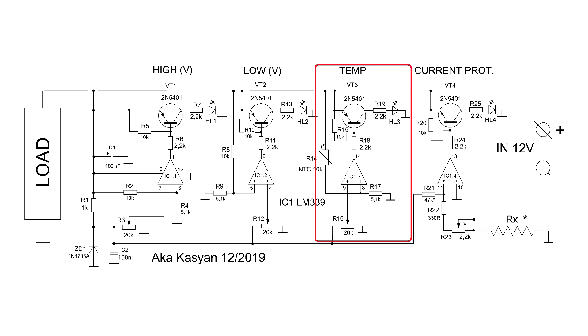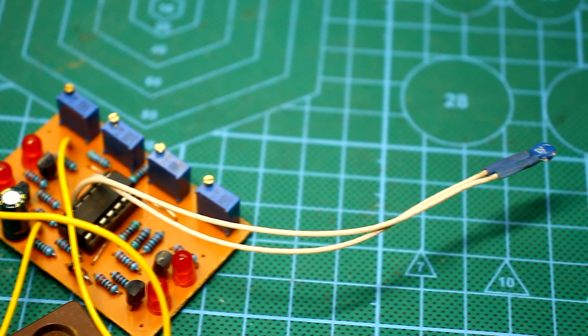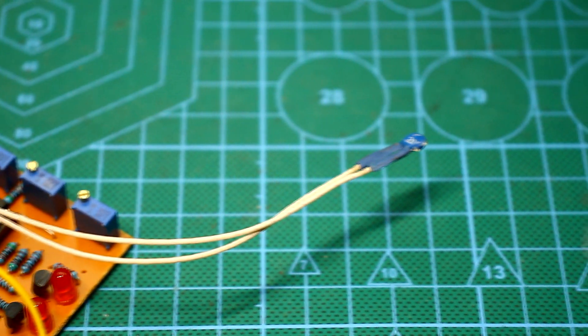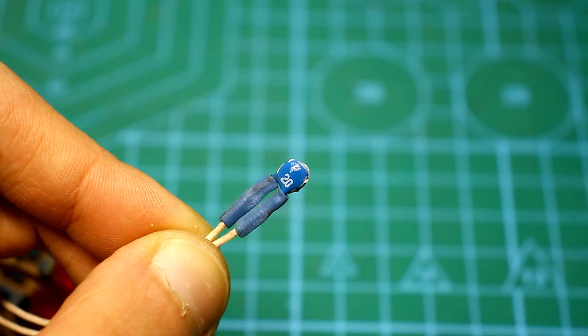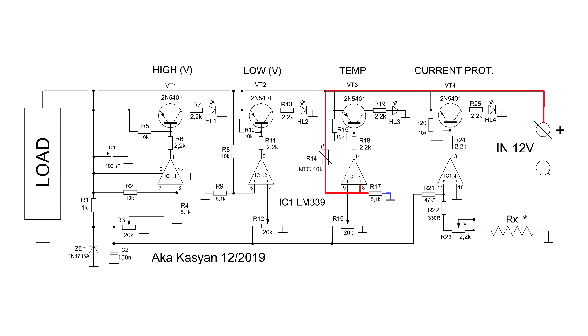The thermal protection system is also not much different. Everything is the same. Only one of the divider resistors is replaced by a thermistor. The NTC-type thermistor is 10 kOhms. It decreases resistance when heated. This will increase the voltage at the non-inverting input of the comparator. That is, the balance between the inputs will be upset. As a result, the state of the output of the comparator will change, and the transistor will operate.